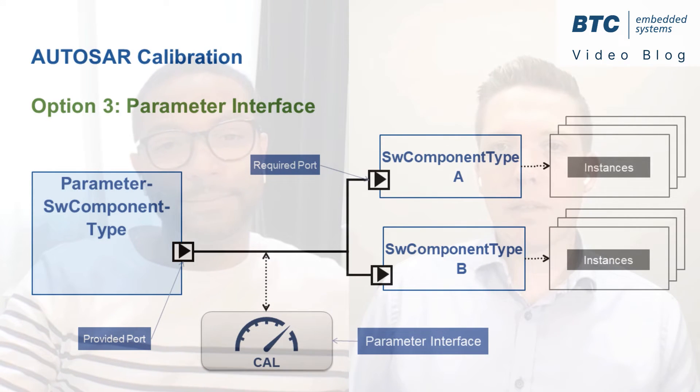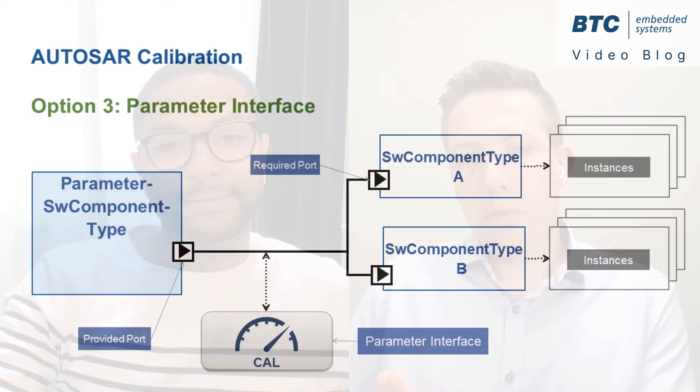Right Nabil, but what's the most common scenario? Well, in general I think the three options are popular, but people tend to work more with single instance components, and then in this case option one and option two basically result in the same thing.